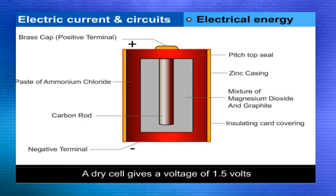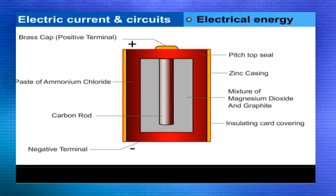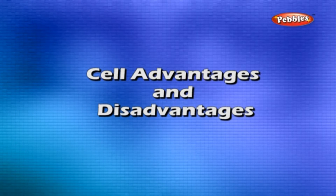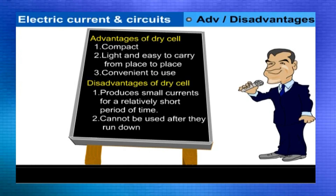Other varieties of dry cells include silver cells, lithium cells, or button cells, etc. These are much smaller in size and are therefore used in calculators, watches, and cameras. Another type is known as the mercury cell. Advantages of dry cells: they are compact, light, and easy to carry and convenient to use. Disadvantages: they produce small currents for a relatively short period of time and cannot be used after they run down.